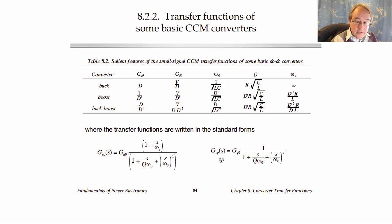So what I would say here is that in each case the GVG or line to output transfer function can be written in this form with two poles and a DC gain.